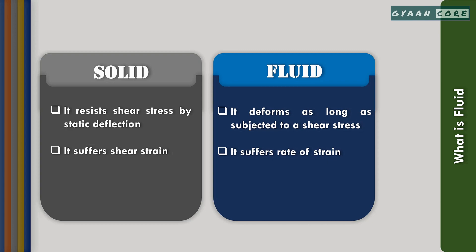The fluid can be classified as liquid and gas. In liquid, the cohesive forces are strong between the closely packed molecules, which tends to retain its volume, and if unconfined from above, it will form a free surface in a gravitational field. On the other hand, the cohesive forces are negligible in a gas due to the widely spaced molecules. Therefore, it has no definite volume and is free to expand until it finds a confining wall.